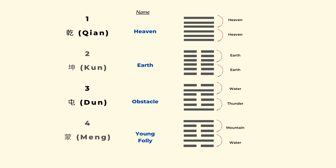The second one is Kun, or the earth. Six lines are all broken lines, so that's the most yin — it's the opposite of the Qian Gua. But it doesn't mean it's bad; it just shows the quality of mother earth. It covers and tolerates a lot of things. The energy is more passive and softer, but it's still very powerful and can grow all kinds of things. Just like a mother, it can give birth to new lives and take care of others.